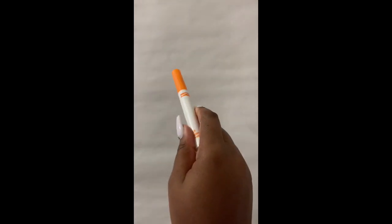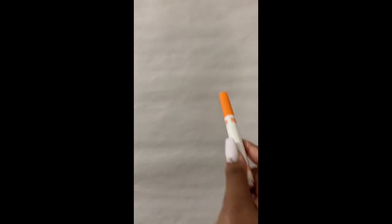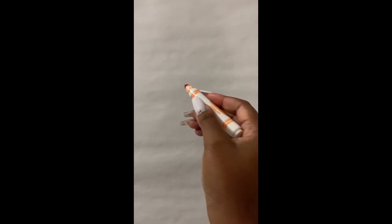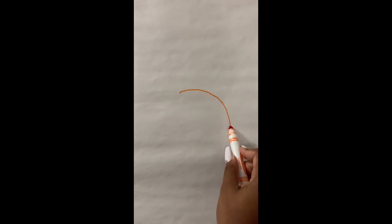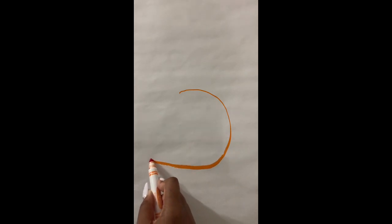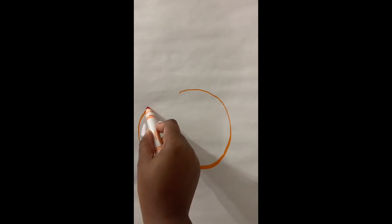So we're gonna start with a circle shape, just like we practiced. With the orange, I'm going to start at the top and draw a curved line going around and coming back to my starting point. That circle's good enough.